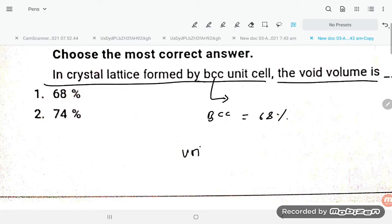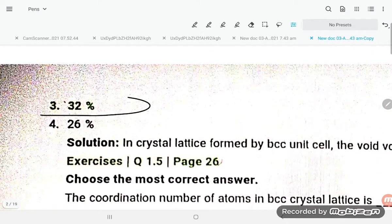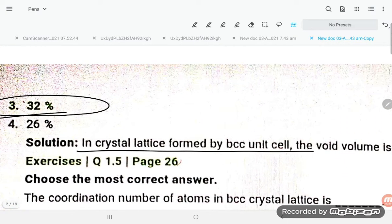So void, if you talk about void, means what students? 100 minus 68 percent, so it is coming how much? 32 percent. So this is wrong, so the correct option is option number three. In crystal lattice formed by bcc unit cell, the void volume is 32%.